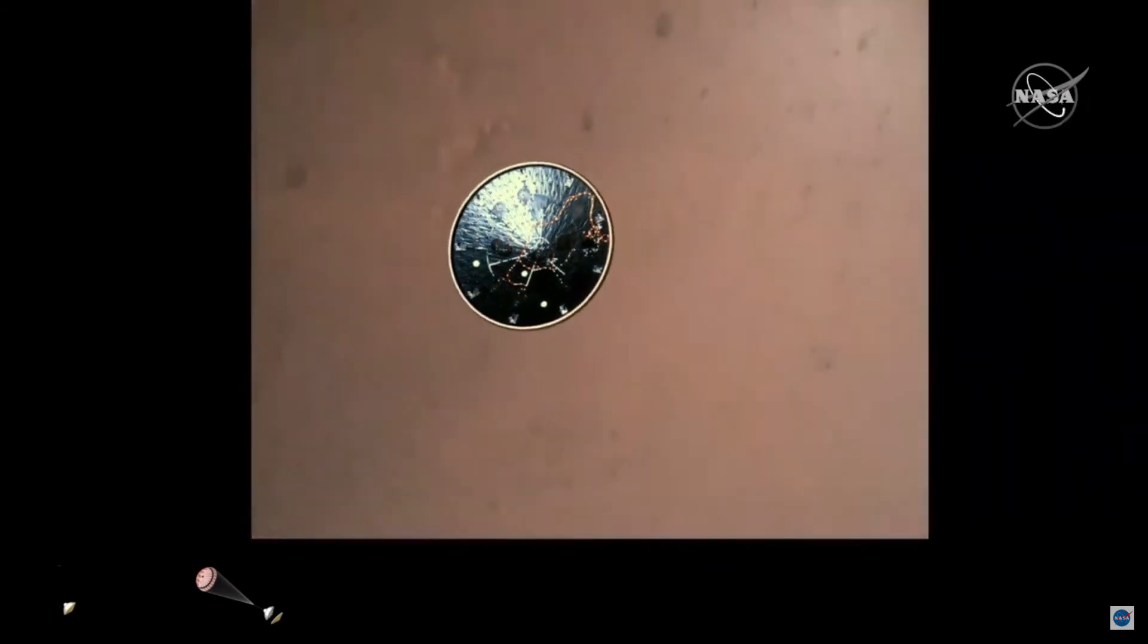Heat shield separation. Perseverance has now slowed to subsonic speeds, and the heat shield has been separated. This allows both the radar and the cameras to get their first look at the surface. Current velocity is 145 meters per second at an altitude of about 9.5 kilometers above the surface.